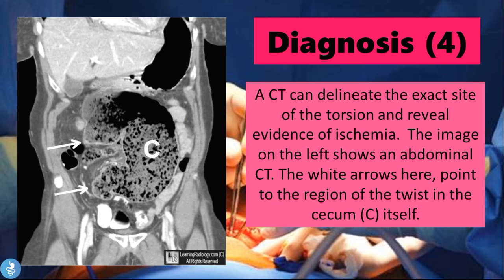Continuing with imaging diagnostics, a CT scan can delineate the exact site of the torsion and reveal evidence of ischemia. The abdominal CT image shows white arrows pointing to the region of the twist in the cecum itself, and we can see how largely dilated the cecum is.